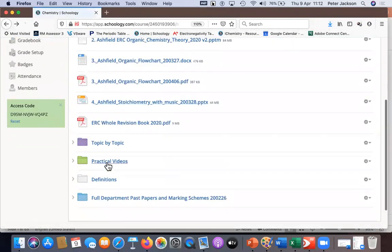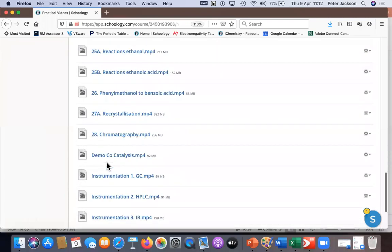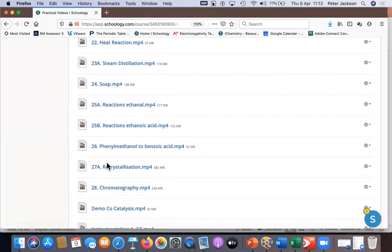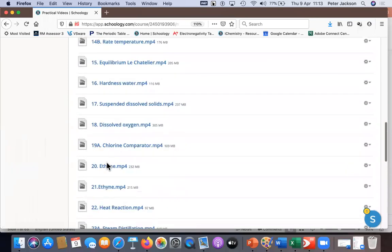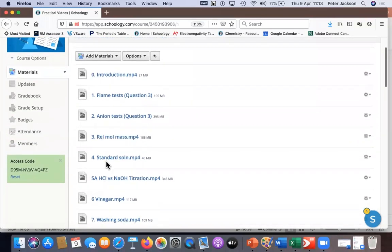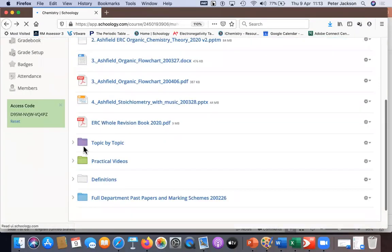If you go back here to the folder again, there is this one here which is called topic by topic. So if we click on that, what it does is it takes all the exam papers from about 2002 up to 2016. All the questions dealing with titration, which is question number one in the exam, are all on this with the answers.